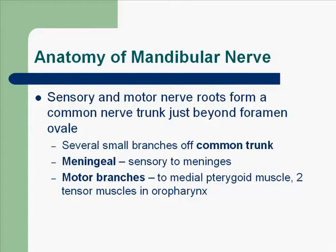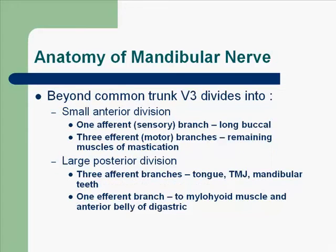Those muscles are the tensor veli palatini and the tensor tympani. Beyond the common trunk, V3 divides into two divisions: a smaller anterior division and a larger posterior division. In the small anterior division, there is one afferent, which is a sensory branch — the long buccal nerve — and three efferent motor branches which innervate the remaining muscles of mastication.